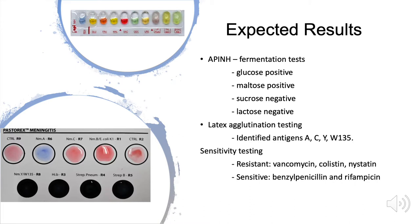The latex agglutination tests directly detected antigens for Neisseria meningitidis. Groups A, C, Y, W135 were present in the patient's blood culture. Sensitivity tests revealed Neisseria meningitidis is resistant to vancomycin, colistin, and nystatin. Neisseria meningitidis is sensitive to benzylpenicillin and rifampicin.